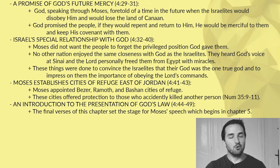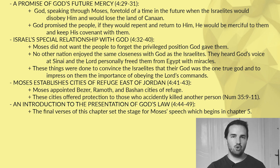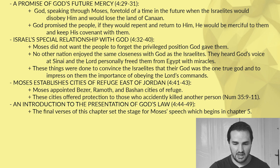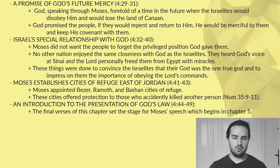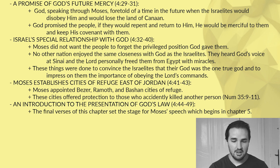In our fourth section, verses 32 through 40, entitled Israel's special relationship with God, Moses did not want the people to forget the privileged position God had put them in. No other nation enjoyed this kind of special relationship with God. The Israelites had heard God's voice, seen him in the cloud, the fire, the darkness on Mount Sinai, and God had personally delivered them from slavery in Egypt with the ten plagues. These things were done, Moses told them, to convince them that they worshipped the one true God and to impress on them the importance of obeying his commands. This was not a distant God — he was powerful, present, and to be obeyed.